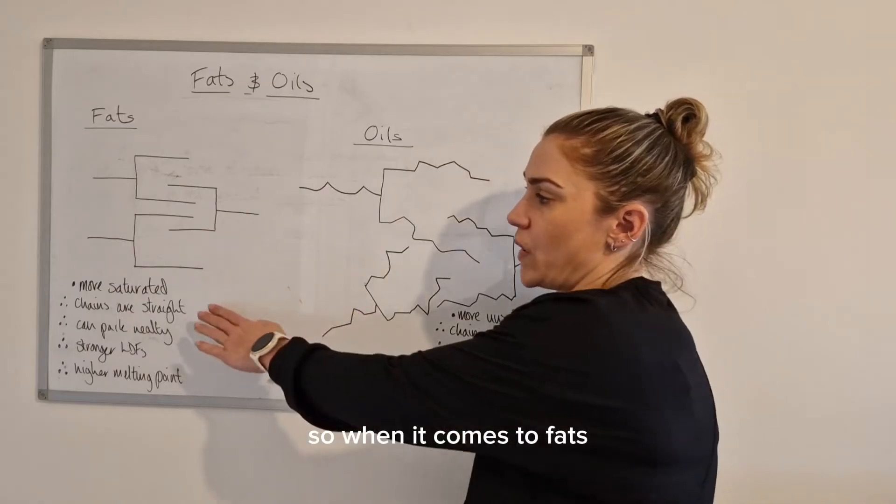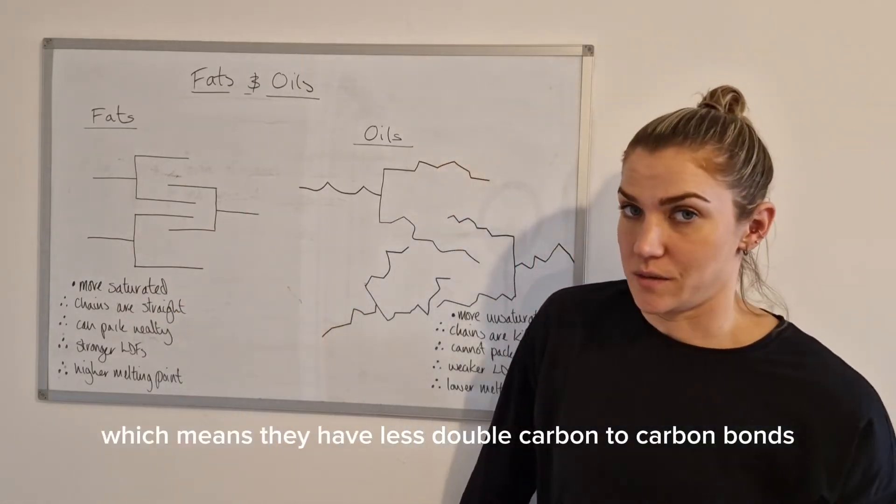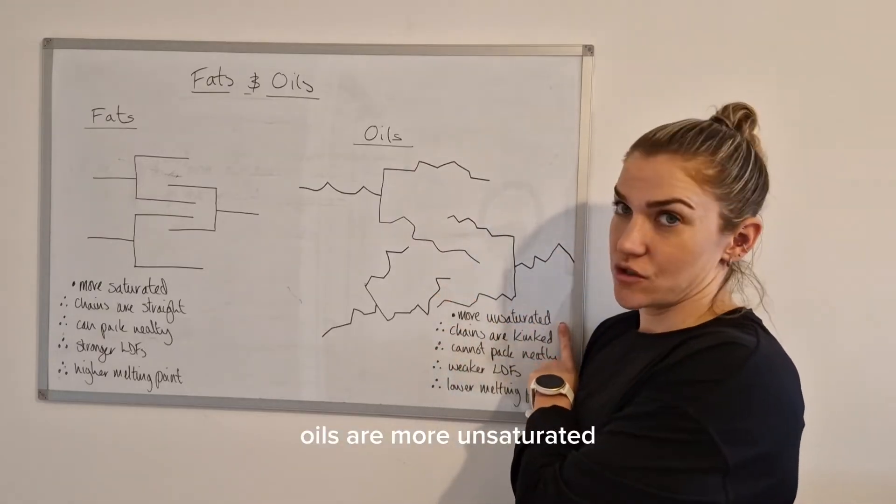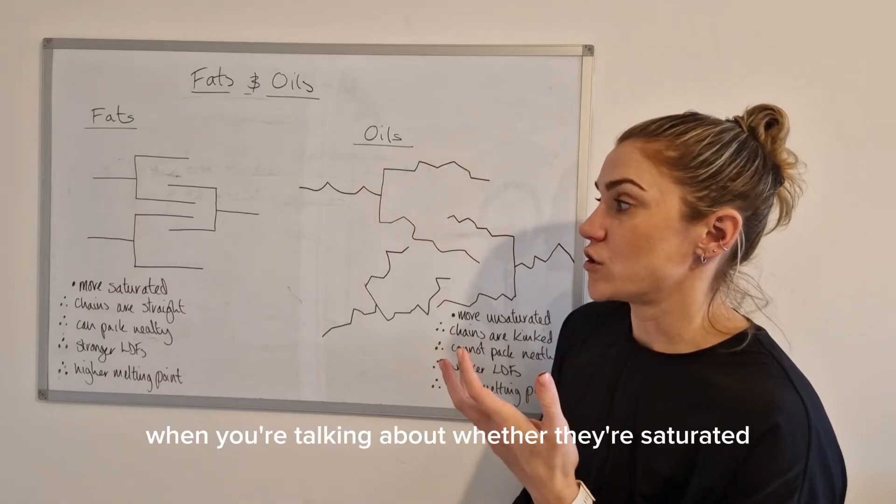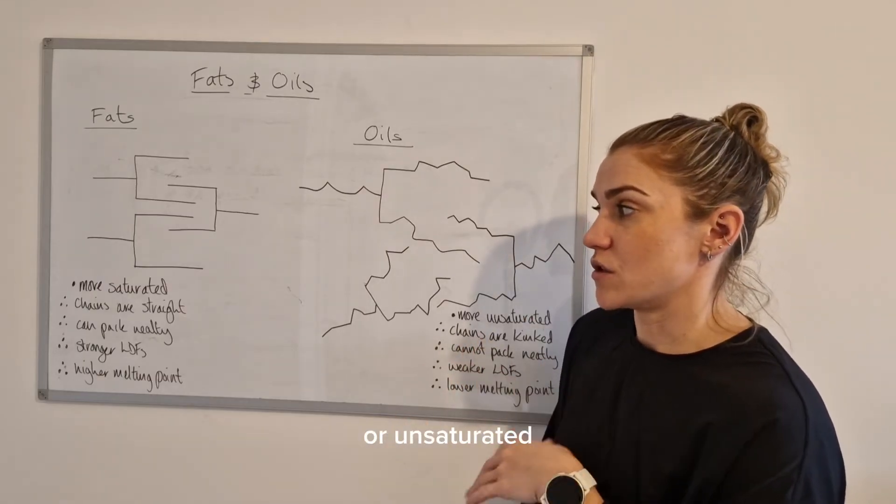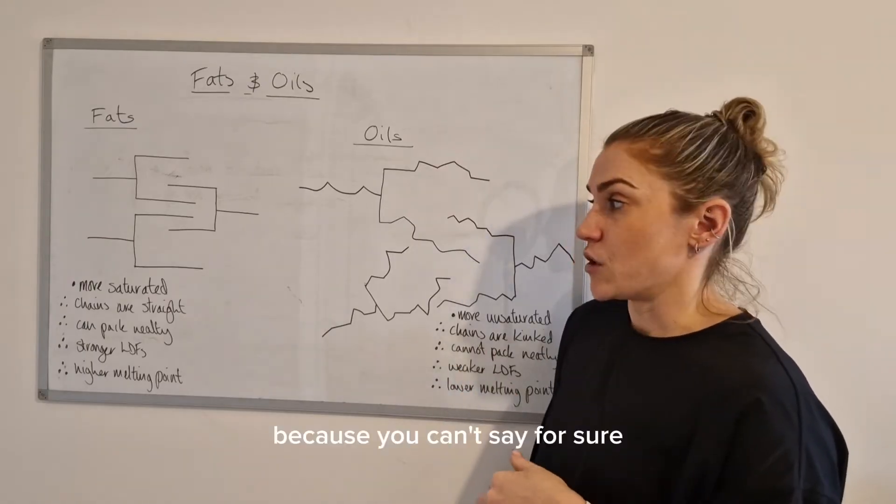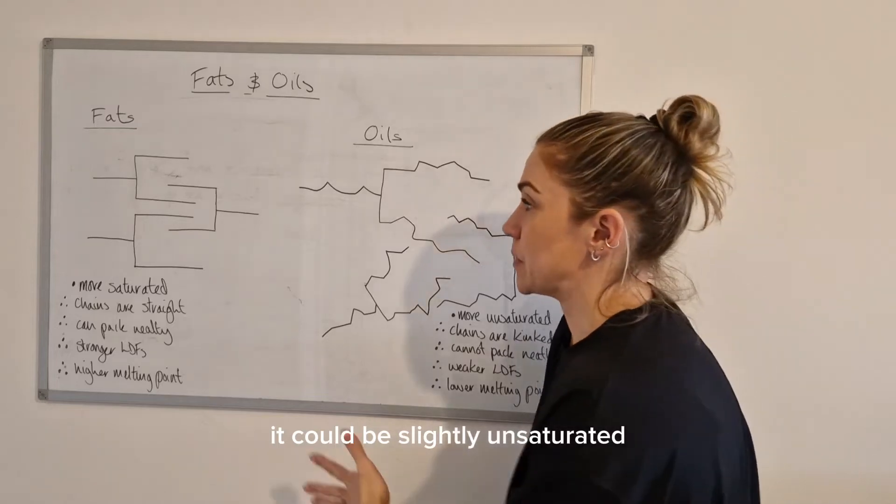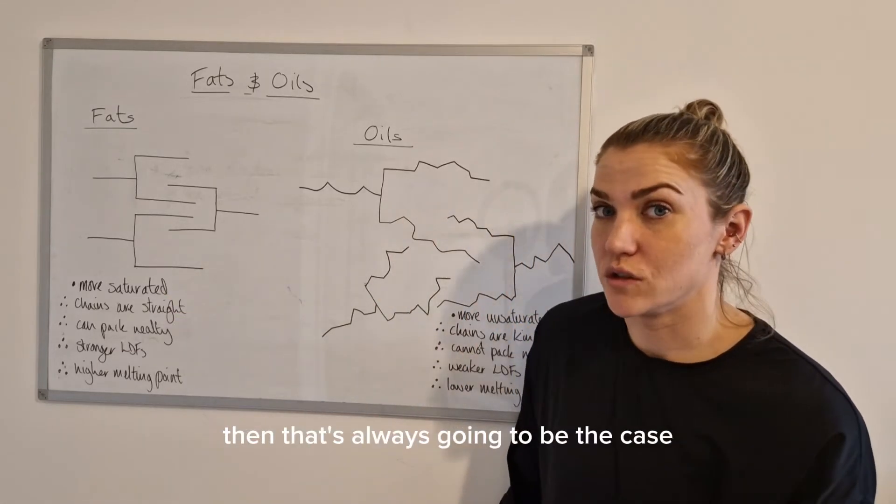When it comes to fats, they are more saturated which means they have less double carbon to carbon bonds. Oils are more unsaturated which means they have more double carbon to carbon bonds. You need to make sure you use the word 'more' because you can't say for sure if that's fully saturated. But you say it's more saturated than an oil, then that's always going to be the case.